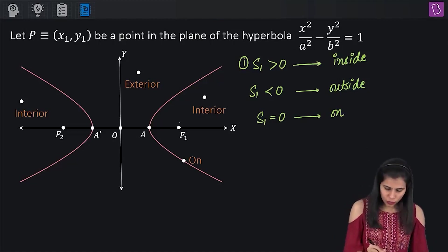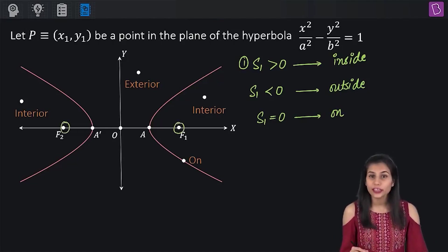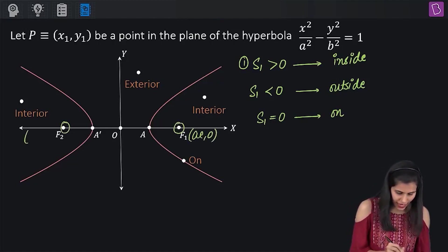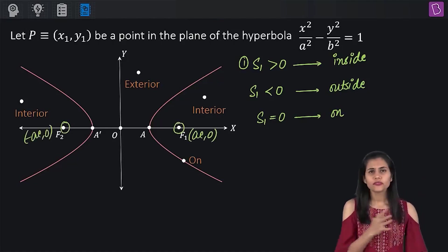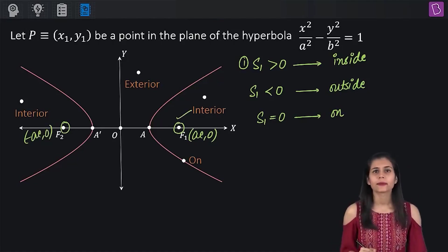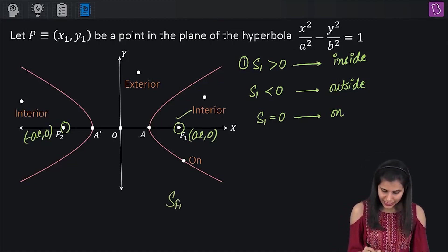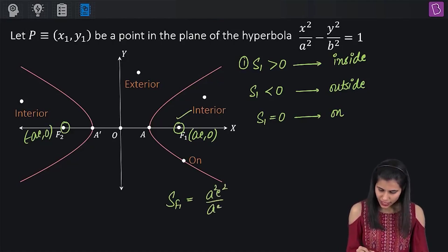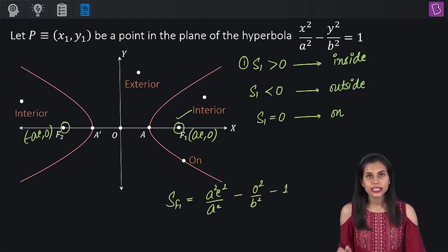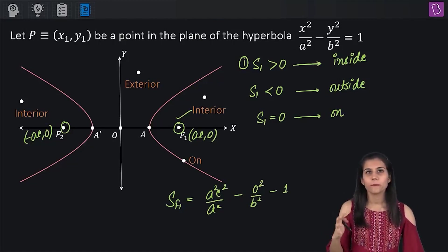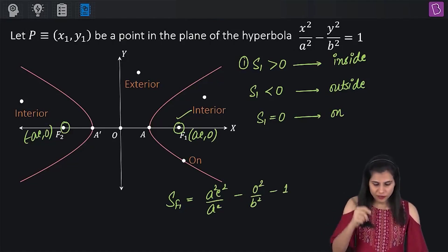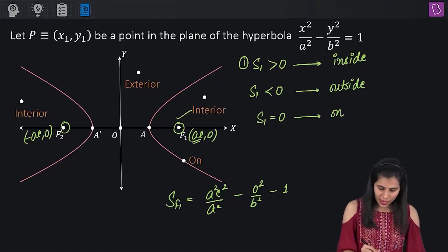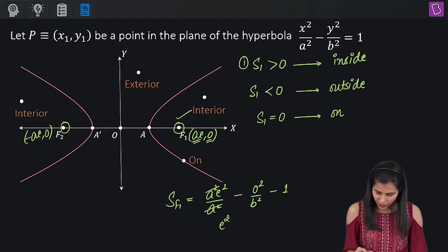Now, you can very evidently catch hold of two interior points which are F1 and F2. Their coordinates are ae, 0 and minus ae, 0. Out of these two pick up any one point, let's say I pick up F1. Now, compute the value of S at F1, it will come out to be what? a squared e squared by a squared minus 0 square by b squared minus 1, right? In place of x, I've plugged in the x coordinate of F1. In place of y, I've plugged in the y coordinate of F1. Simplify, what do you end up getting? This is e squared minus 1.